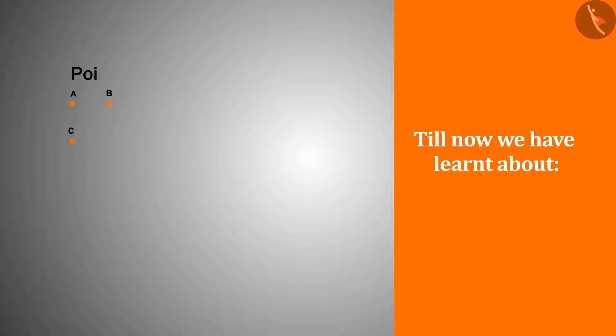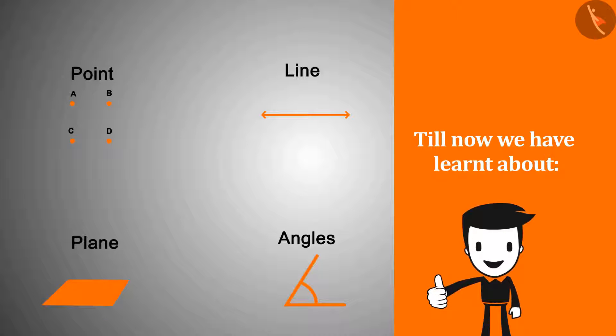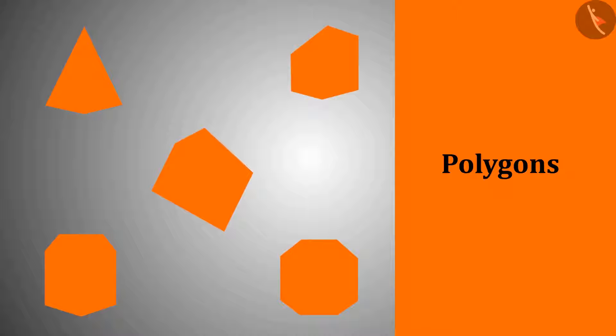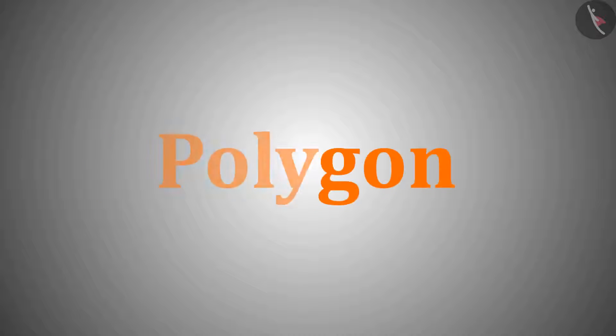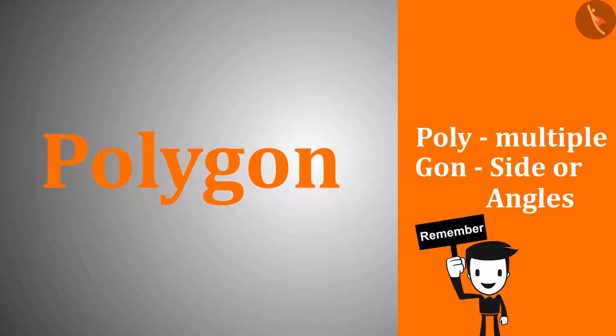Till now we have learnt about points, lines, planes and angles. In this video we will learn about polygons, another important element of geometry. The word polygon is made up of two words: poly and gon, where poly means multiple and gon means side or angles. Therefore, figures which have many sides are called polygons.